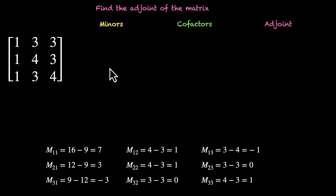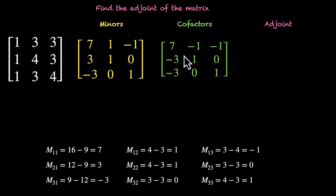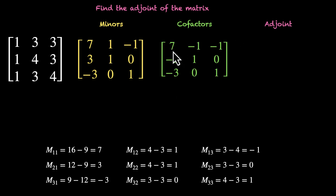Let's put the minors inside a matrix: 7, 1, minus 1, 3, 1, 0, minus 3, 0, and 1. Now let's change signs for the appropriate four elements to get our cofactors. So we'll have 7, minus 1, minus 1, minus 3, 1, 0, minus 3, 0, and 1. This is the matrix of our cofactors.